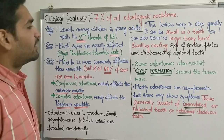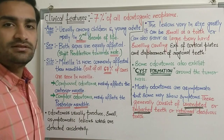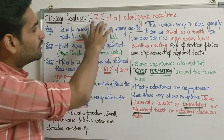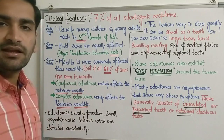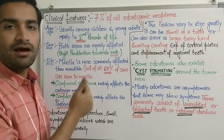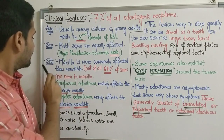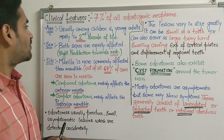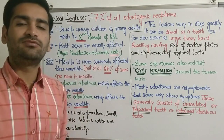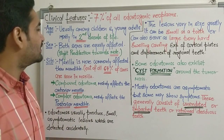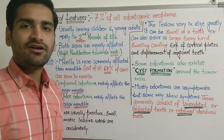Moving on to the clinical features of odontoma: firstly, regarding the prevalence or frequency of occurrence, odontoma accounts for about seven percent of all odontogenic neoplasms. Regarding age, it usually occurs among children and young adults. If we consider the age group directly, the second decade of life is most common.